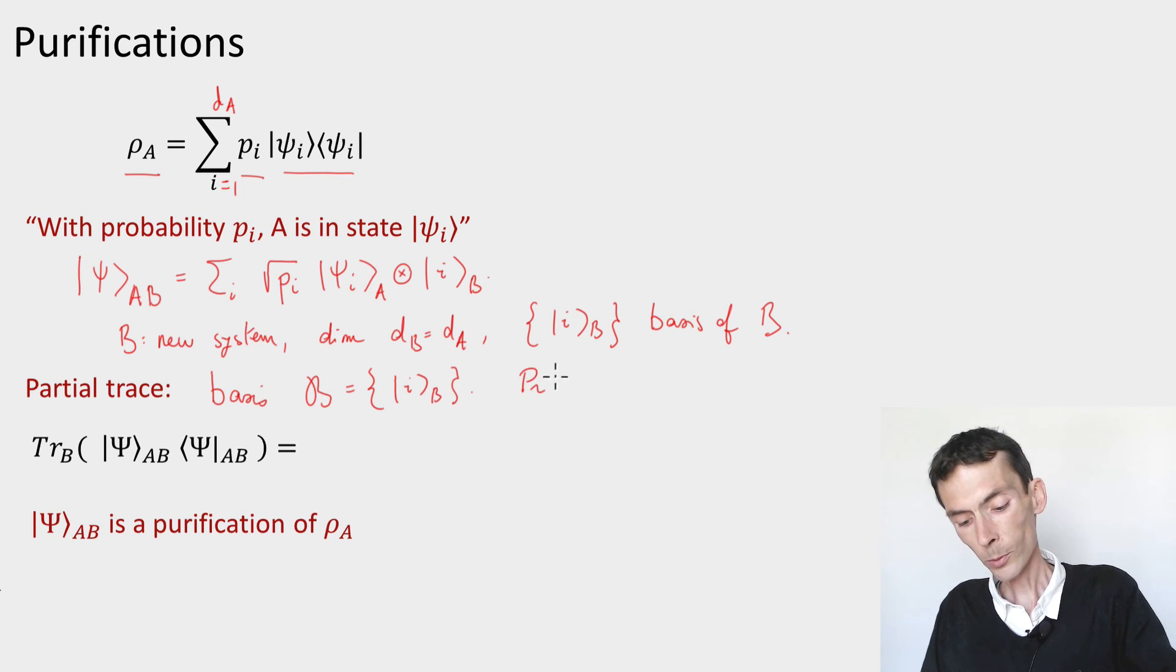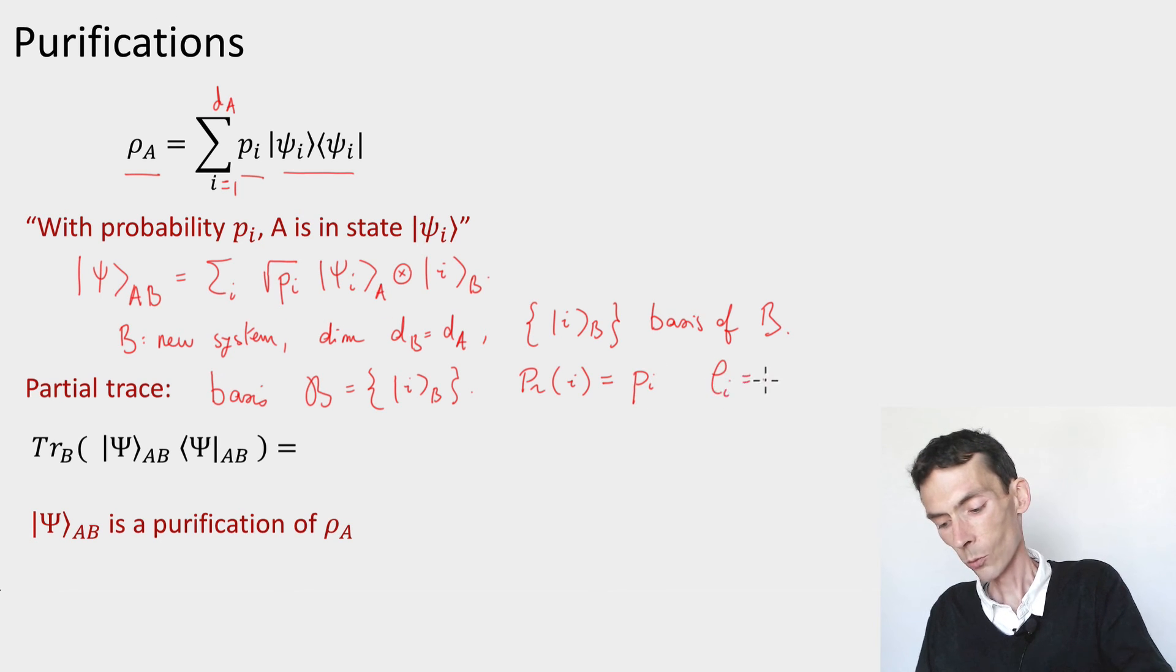Then if we compute the probability that we get a certain outcome i, we're getting used to this now, it's just going to be the squared norm of this vector, square root pi psi i, which is pi. And the corresponding projected state rho i will be psi i on the A system, tensored i on the B system.